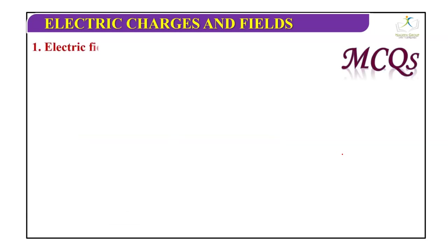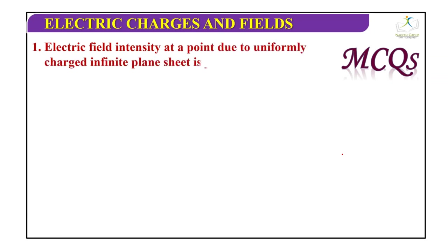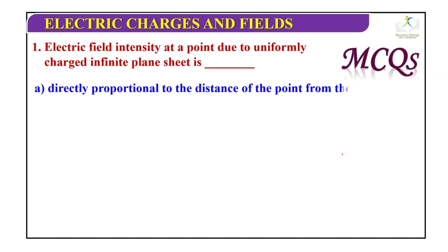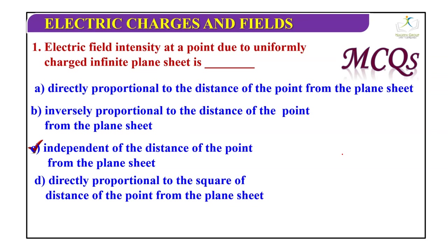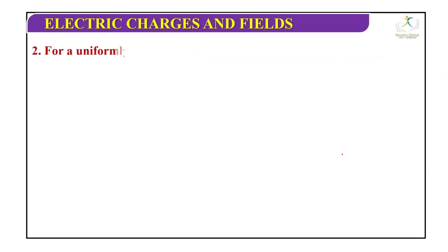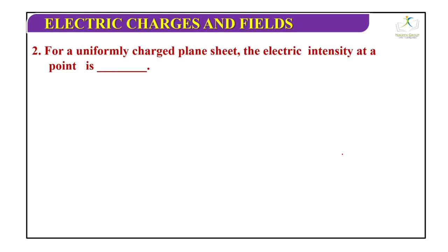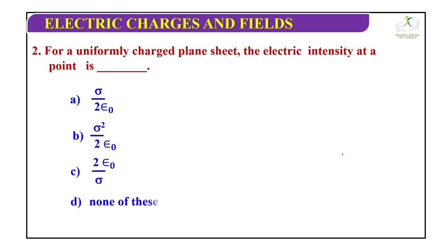Practice questions on infinite plane sheet: Question 1 — Electric field intensity at a point due to a uniformly charged infinite plane sheet is directly proportional to distance, inversely proportional, independent of distance, or directly proportional to the square of distance? The correct answer is C, independent of the distance. Question 2 — For a uniformly charged plane sheet, electric intensity at a point is sigma by 2 epsilon naught. Correct answer is option A.